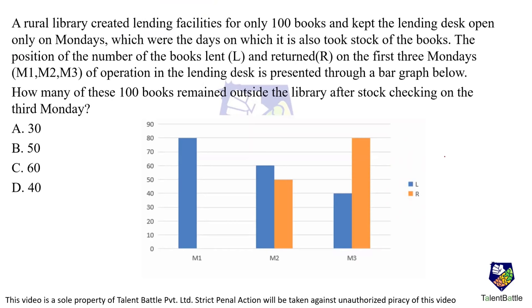Now we solve a question from data interpretation. Questions can be based on tabular columns, pie charts, bar graphs, or line graphs. This question uses a bar graph, which is common in NQT. A rural library has 100 books and keeps its lending desk open only on Mondays, when it also takes stock. We need to find how many books remain after stock checking on the third Monday.